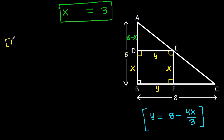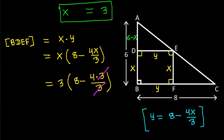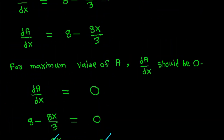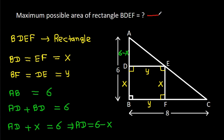Now, the area of BDEF is X times Y, which is X times (8 minus 4X over 3). Substituting X equals 3: 3 times (8 minus 4 times 3) over 3. The 3 cancels, giving 3 times (8 minus 4), which is 3 times 4, that is 12. So the maximum area of BDEF is 12.